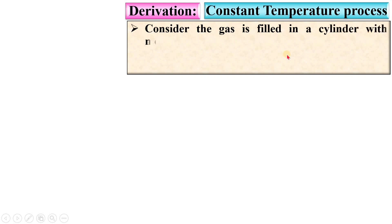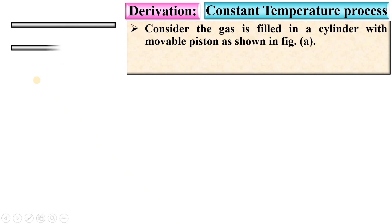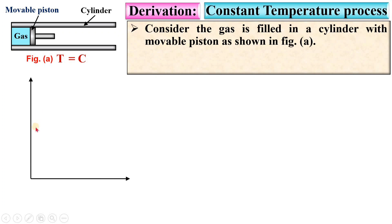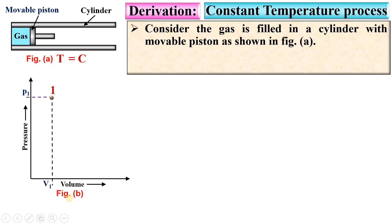Consider the gas filled in a cylinder with a movable piston as shown in Figure A. This space is filled with the gas, and this gas is considered as a system. Now I am going to draw the PV diagram to represent the state of this gas. This is the pressure versus volume diagram, and the initial state of the gas is State 1, with corresponding pressure P1 and volume V1. Let us call this Figure B.